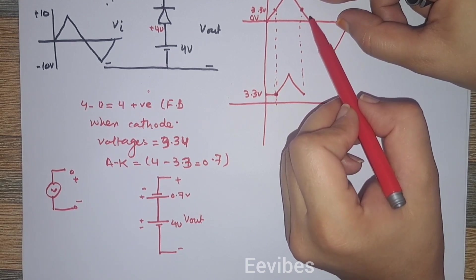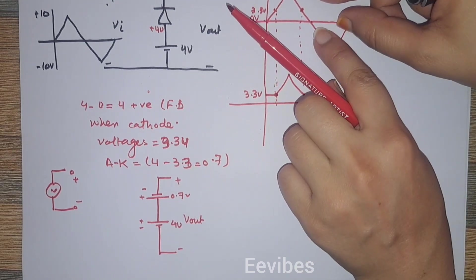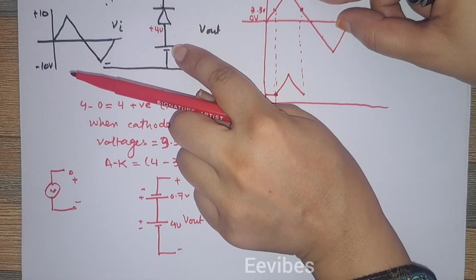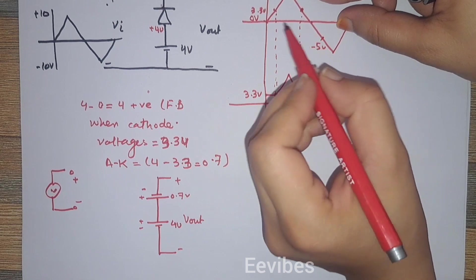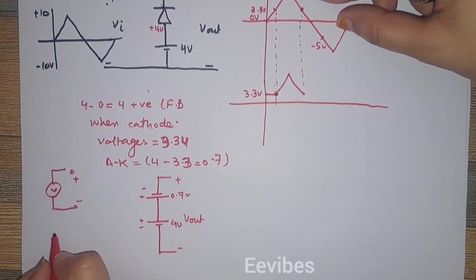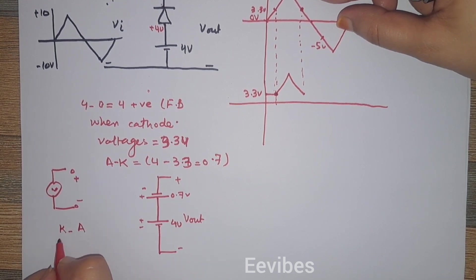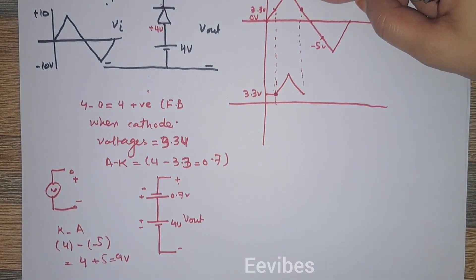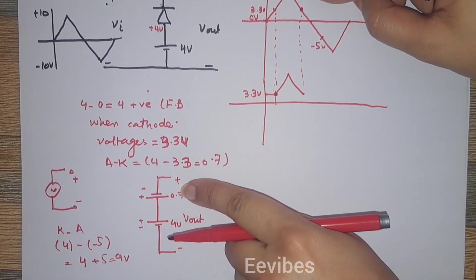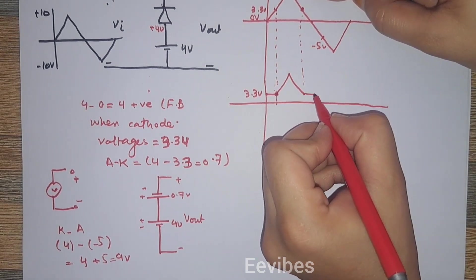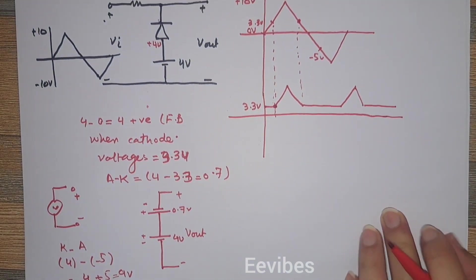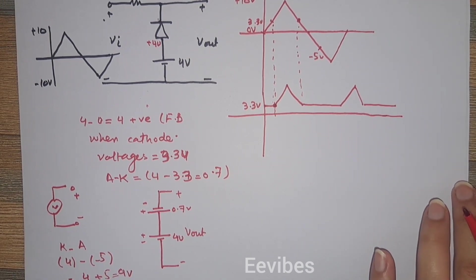When the input voltage reaches 3.3, 3, 2, 1 volts or even goes negative, the cathode potential becomes smaller than the anode. For example, if V-in equals minus 5 volts, the anode-to-cathode potential is 4 minus (minus 5) equals 9 volts — so the diode is forward biased for the entire negative cycle. Replacing it with the 0.7 volt battery gives output equal to 3.3 volts. This is the example of the parallel biased clipper. If you have questions, drop them in the comments. Thank you for watching.